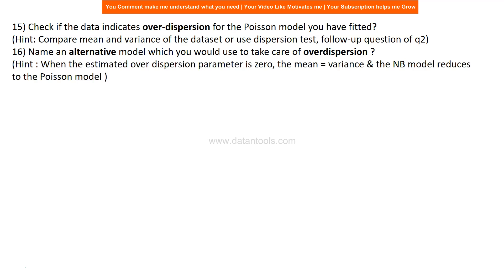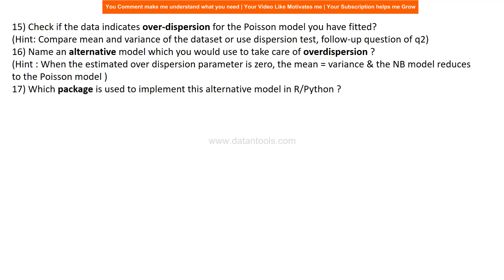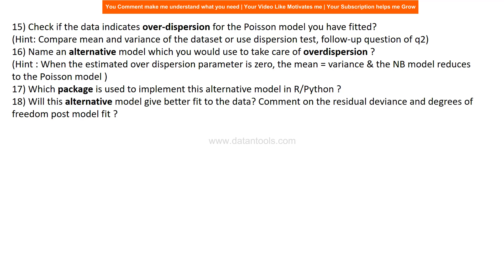When the estimated over-dispersion parameter is zero, mean equals variance and the negative binomial (NB) model reduces to the Poisson model. You need to know which package in R or Python is used to implement the negative binomial model. Then check whether this alternative model gives a better fit to the data by commenting on the residual deviance and degrees of freedom after model fit, and compare it with the previous Poisson model.